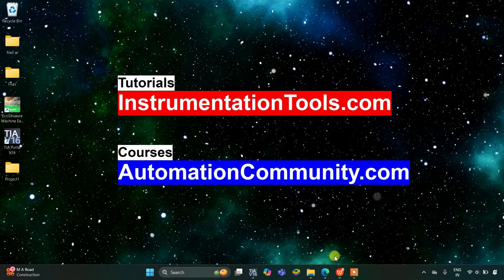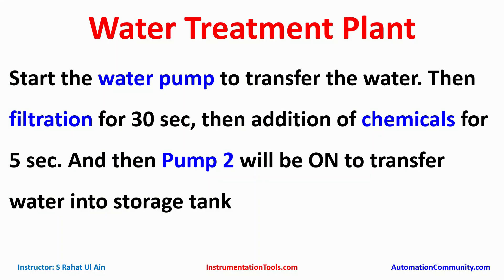Hello everyone, welcome to Automation Community. Today in this video we are going to discuss an example about a water treatment plant. The process starts by turning on the water pump to transfer the water, then filtration for 30 seconds, then addition of chemicals for 5 seconds.